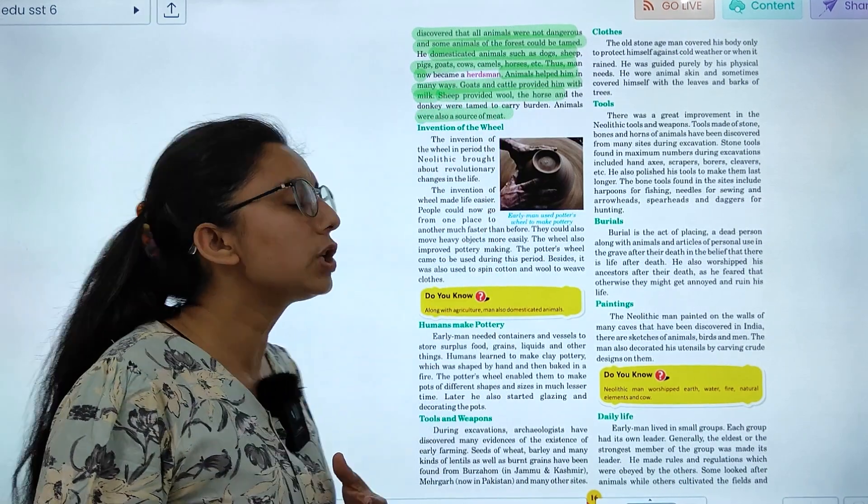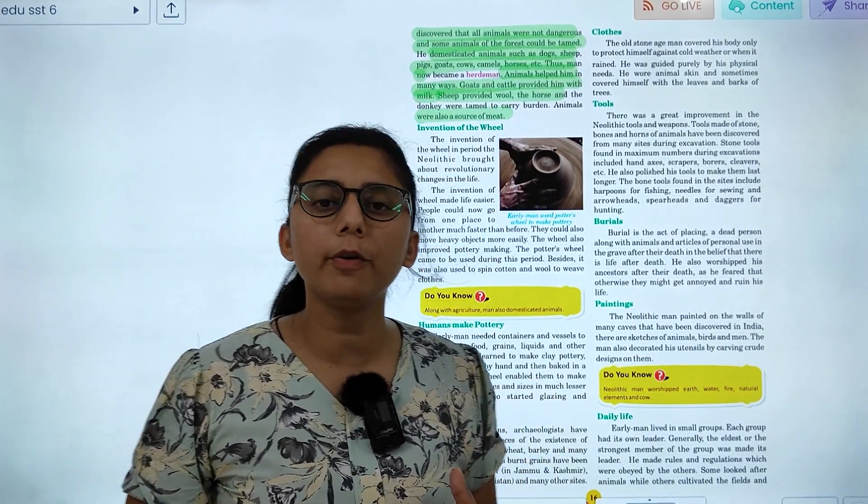Animals are the source of meat. And some animals are the source of meat. Now we will talk about invention of the wheel.